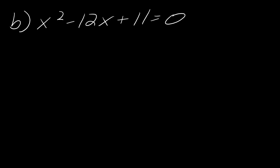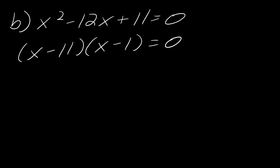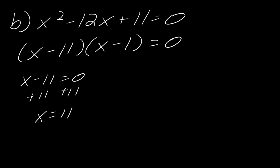As a quick check for yourself, pause the video here and try to solve this one, then hit play when you're ready. This will factor as x minus 11 times x minus 1 equals zero. So x minus 11 equals zero when x equals 11, and x minus 1 equals zero when x equals 1. So x equals 11 and x equals 1 are my two solutions.